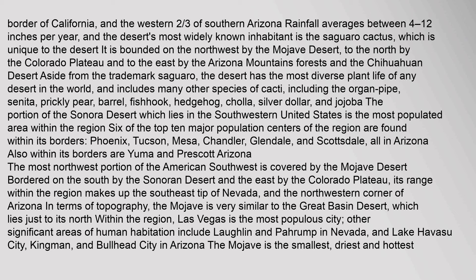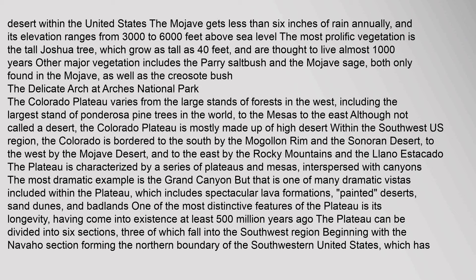The most northwest portion of the American southwest is covered by the Mojave Desert, bordered on the south by the Sonoran Desert and the east by the Colorado Plateau. Its range within the region makes up the southeast tip of Nevada and the northwestern corner of Arizona. In terms of topography, the Mojave is very similar to the Great Basin Desert, which lies just to its north within the region. Las Vegas is the most populous city; other significant areas include Laughlin and Pahrump in Nevada, and Lake Havasu City, Kingman, and Bullhead City in Arizona. The Mojave is the smallest, driest, and hottest desert within the United States, receiving less than six inches of rain annually. Its elevation ranges from 3,000 to 6,000 feet above sea level. The most prolific vegetation is the tall Joshua tree, which grows as tall as 40 feet and is thought to live almost 1,000 years. Other major vegetation includes the Perry saltbush and the Mojave sage, both only found in the Mojave, as well as the creosote bush.